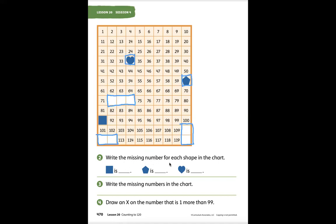Write the missing number for each shape in the chart. Here we have a square. A square has four corners, four sides. This square has four right corners and each side is the same length. It is a 2D shape. So here is our square.